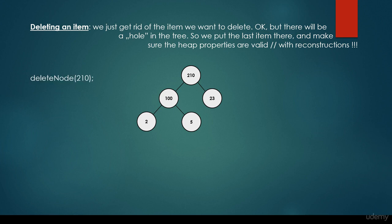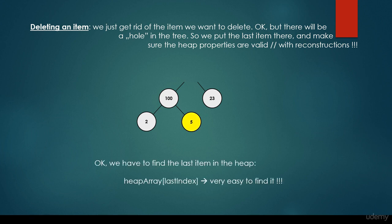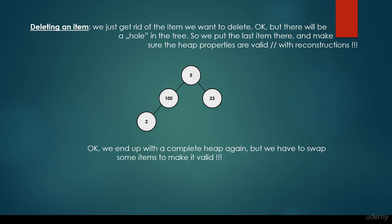For example, we would like to get rid of the root node, the 210. We just get rid of it, but there's going to be a hole, so we have to insert the last item there. So the 5 is going to be the new root node. It's very easy to find the last item, because in the 1-dimensional array it's going to have the last index. It is a valid heap in the sense that it is complete, but we have to make sure that other heap properties are not violated.